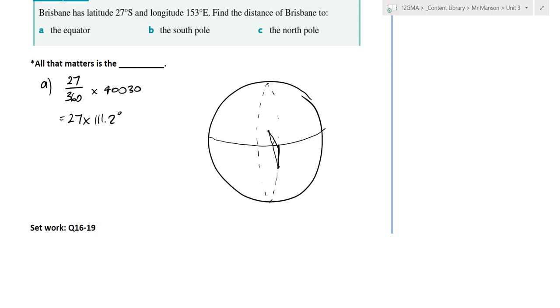Two things I need to say. First of all, determine if it's on a great circle, and if it's on a great circle, just get the angular difference and multiply by 111.2. That's all you need to do.